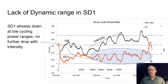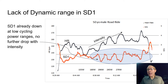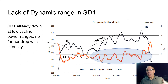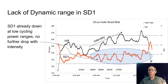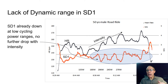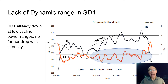Looking at the same ride but examining SD1, there's no dynamic range in the curve. As intensity and heart rate rise, SD1 basically stays plus or minus around two. That's the problem with SD1 — once you've reached mild to moderate intensity it drops no further, and you would have needed some sort of calibration for it to be accurate.